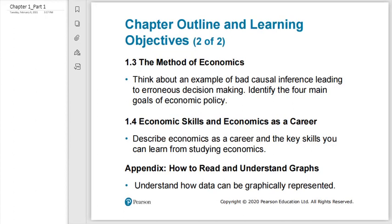By finishing this chapter you will also have an exposure to the methodology used by economists. We make a clear distinction between two types: positive economics and normative economics. In positive economics, we do what every scientist does — explaining phenomena through observation, developing models, explaining variables, and testing ideas through empirical economics.